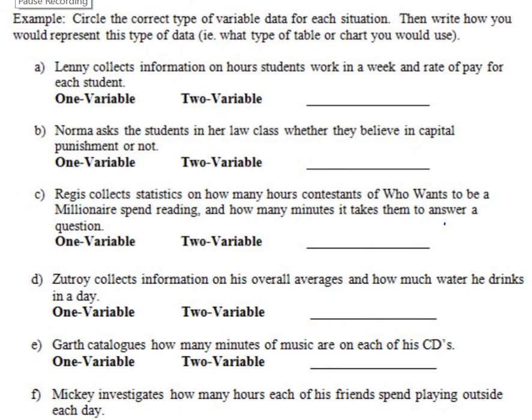Let's try some examples. This is probably a good time where you could pause the video and see if you could identify if the data is one variable or two variable data and what kind of graph can you use to identify it. So in this case, pause the video and see if you could answer this without watching the video. So circle the correct type of variable data for each situation. Then write how you would represent this type of data and the type of graph.